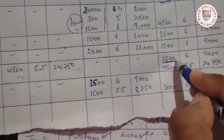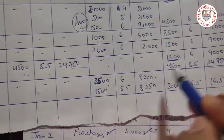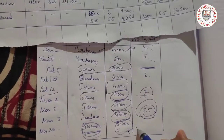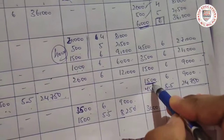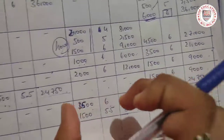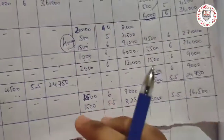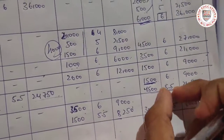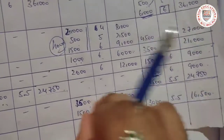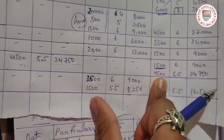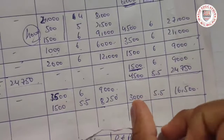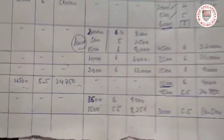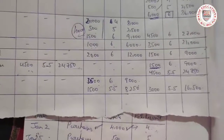The next issue is for 3000 units, but we only have 1500 units at rate 6. So first we take those 1500 units at 6. Then the remaining 1500 needed we take from the 4500 units at rate 5.5. So 1500 into 5.5 equals 8250. The balance remaining is 3000 units at 5.5 equals 16,500.